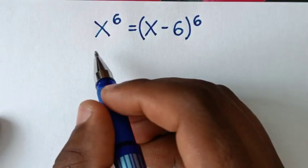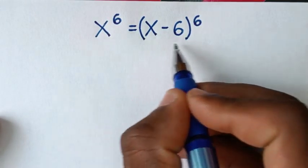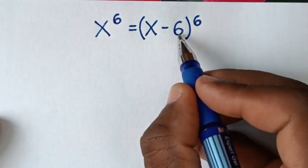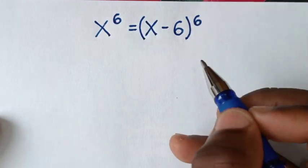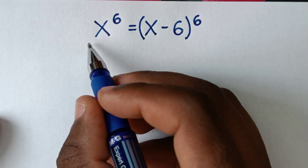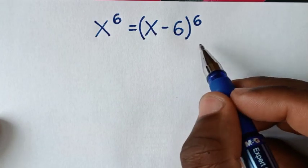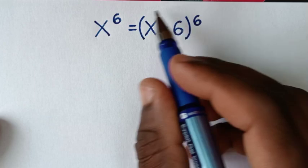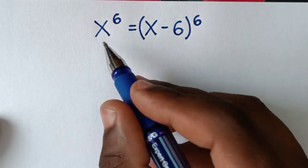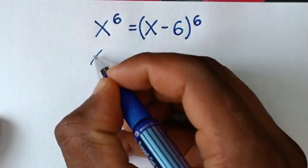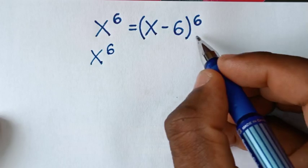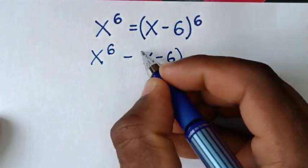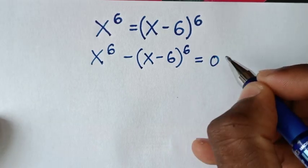Welcome. You are welcome to solve this math problem, which is x power 6 is equal to x minus 6 bracket power 6. To find the values of x from this equation, in the first step we'll take x minus 6 bracket power 6 to the left side, so it will be x power 6 minus x minus 6 bracket power 6 is equal to 0.